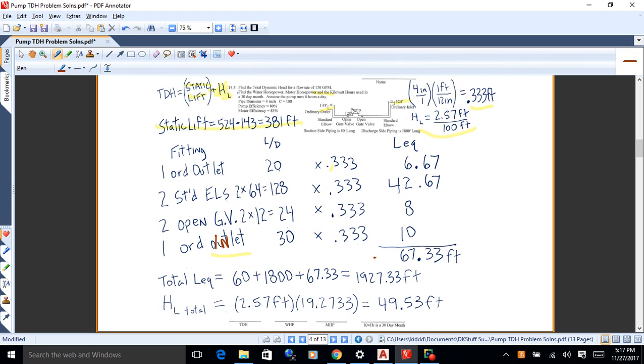So we look up the L over D values. That's the equivalent length over the diameter. You multiply that by the diameter in feet, which we found out was 0.333. So when we do that, we get these values over here. So that's the length of pipe you would run the water through to get the same head loss as the fittings. We want to get that total equivalent length. So we add up the column, we get 67.33 feet. So a 67.33 foot long piece of four inch pipe, C100, would have the same head loss as these fittings would. That's the idea.